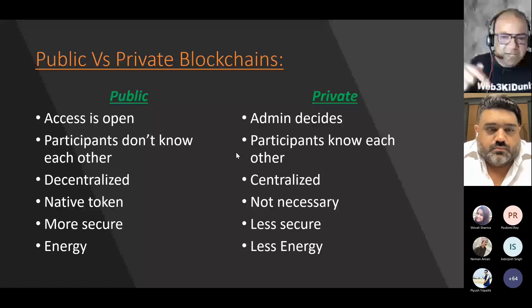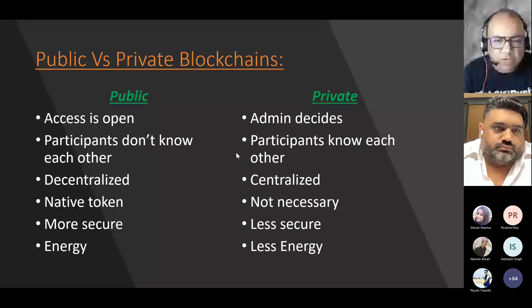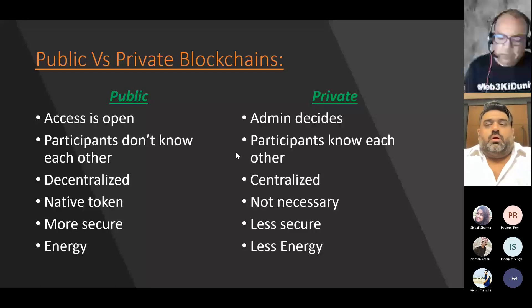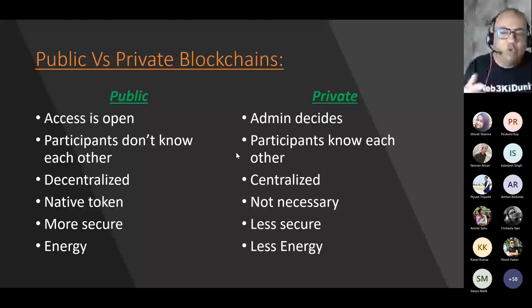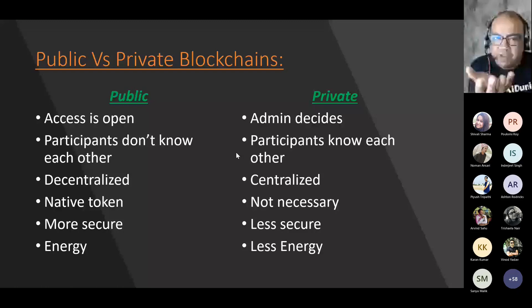Blockchain existed since the 1990s. It's not the blockchain that has revolutionized Bitcoin — Bitcoin made blockchain work through proof of work. Proof of work, the consensus mechanism, was the main part. Blockchain existed, the technology was there. It's the consensus mechanism where everybody agrees to the network.